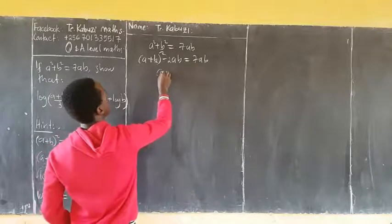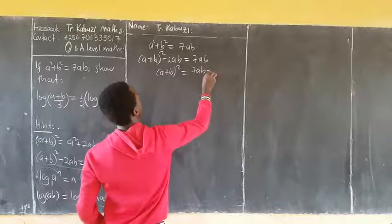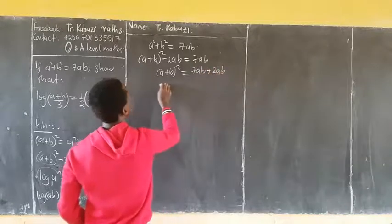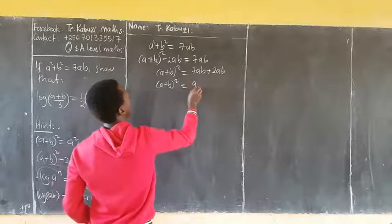So I am adding now, equaling to 7ab. Now plus 2ab, so 9ab.